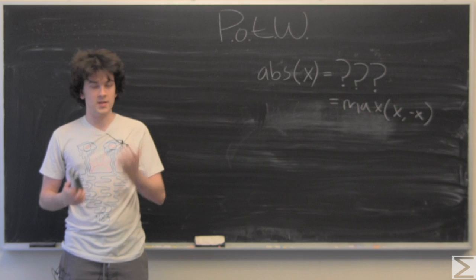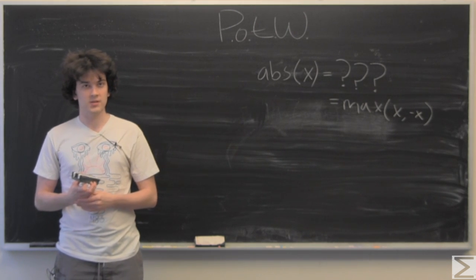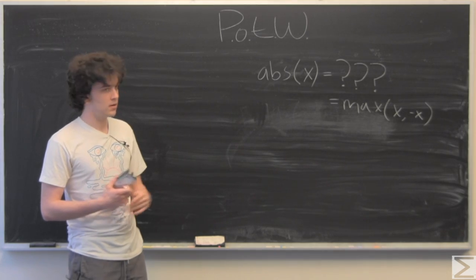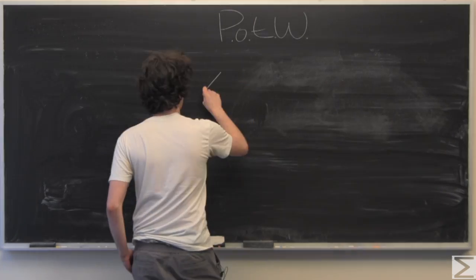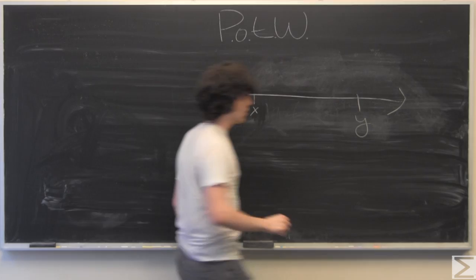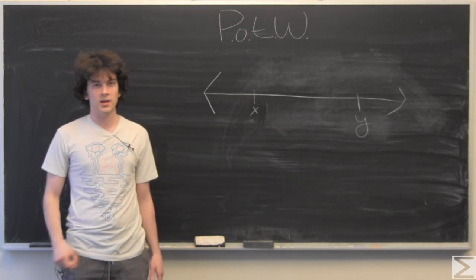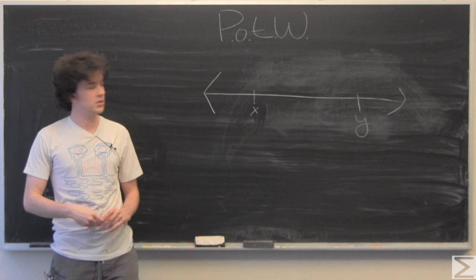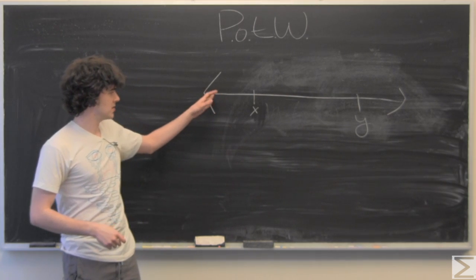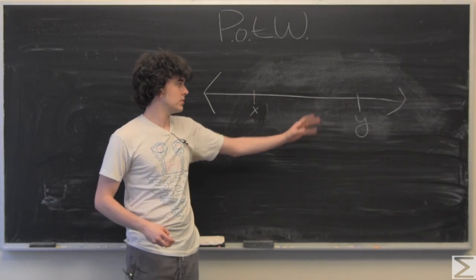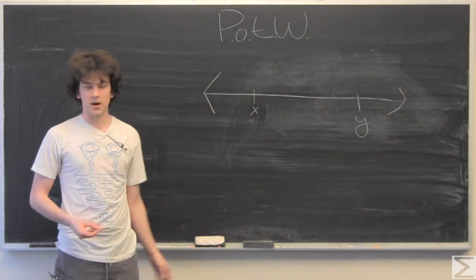Let's move on to writing the max value function with absolute value. Here I have drawn two points on a number line in an arbitrary position. That means zero could be over here somewhere or over here. Zero could be in the middle or even be x or y.